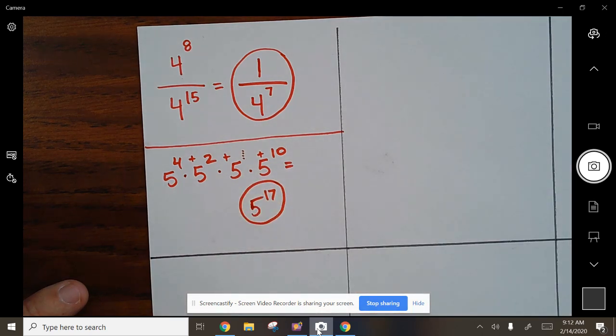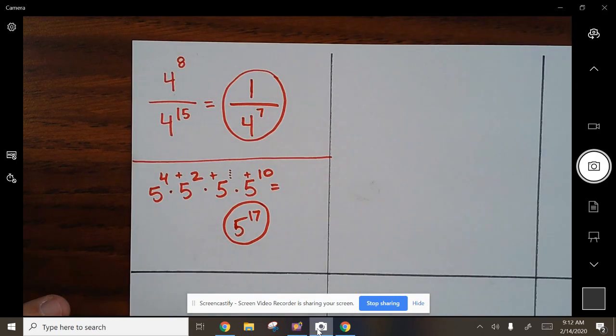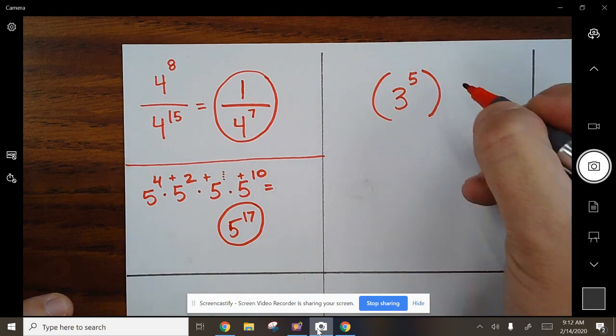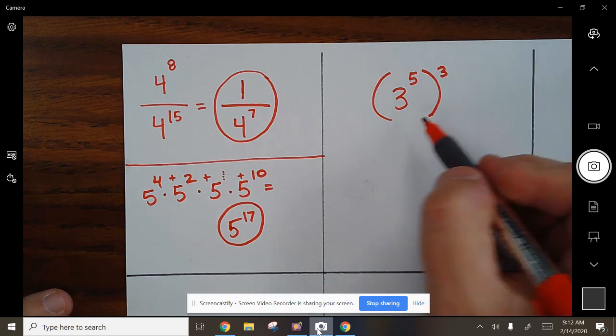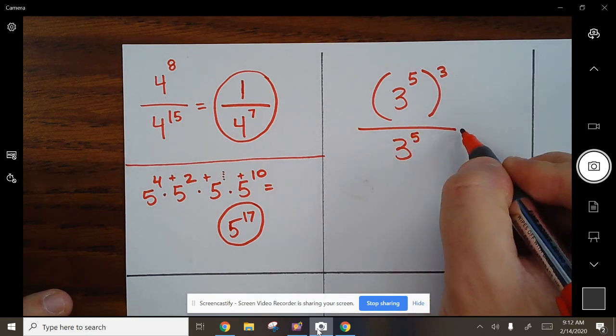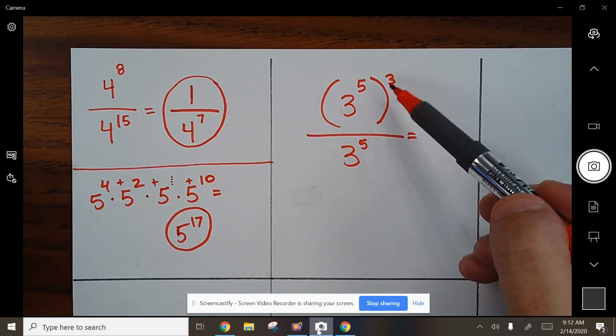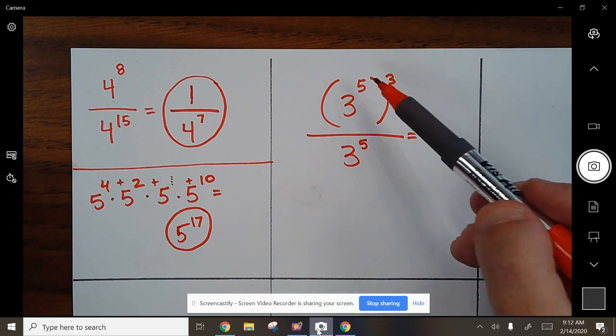All right, let's keep leveling up. Each box is going to be another level. This one here: 3 to the 5th in parentheses to the 3rd, all over 3 to the 5th. What are you going to do first on this one?